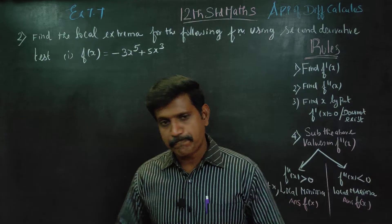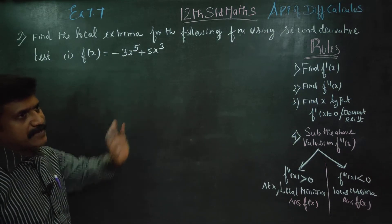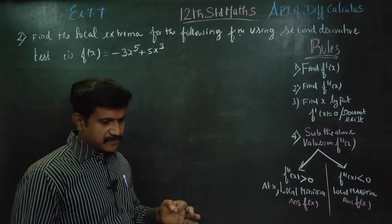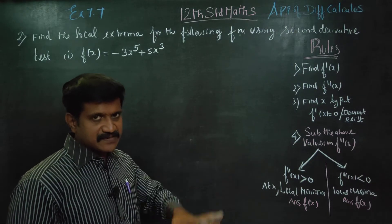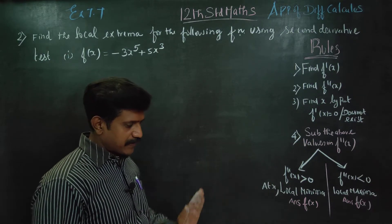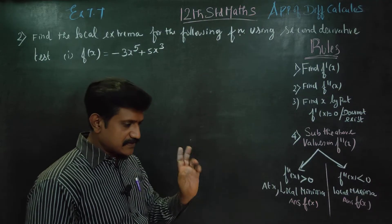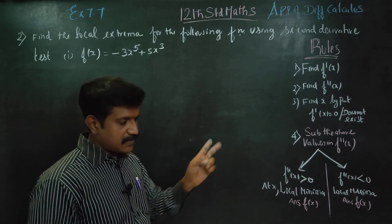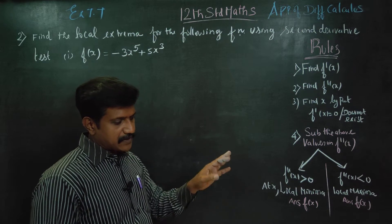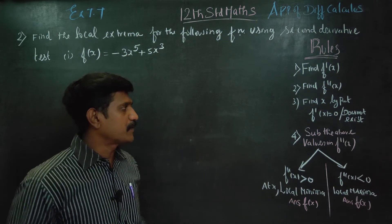For local extrema — local minima and local maxima — the first derivative test is the best test. Using the first derivative test, we look at increasing and decreasing behavior and the change in sign, and from that we find local maxima and local minima.